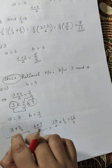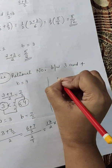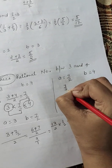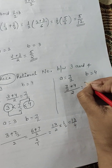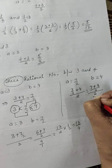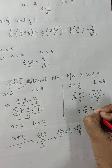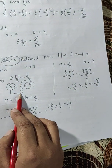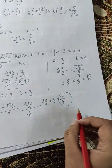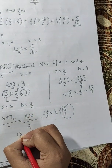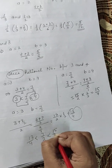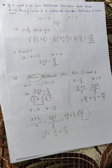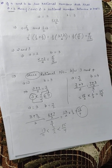Now we ignore 3 and find a rational number between 7/2 and 4. So a equals 7/2 and b equals 4. Computing: (7/2 + 4) / 2 — taking LCM gives (7 + 8) / 2 divided by 2 = 15/2 × 1/2 = 15/4. So the three rational numbers between 3 and 4 are: 13/4, 7/2, and 15/4.